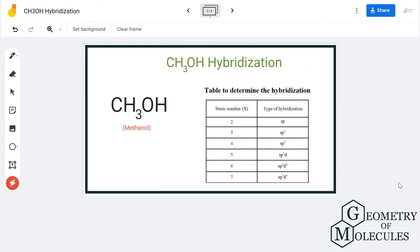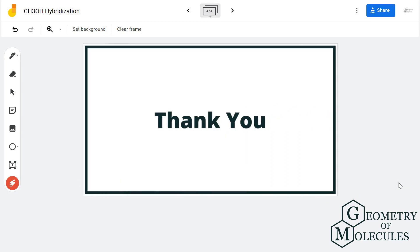Referring to this table, we can see that atoms having steric number four have sp3 hybridization. So the hybridization for carbon in CH3OH is sp3. For more videos on Lewis structure, molecular geometry, polarity, and hybridization of molecules, subscribe to our channel and thank you for watching.